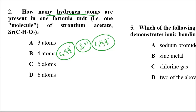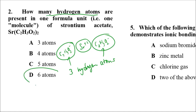So there are two acetates for one strontium. There are three hydrogen atoms here, and three more here. The total is six atoms.